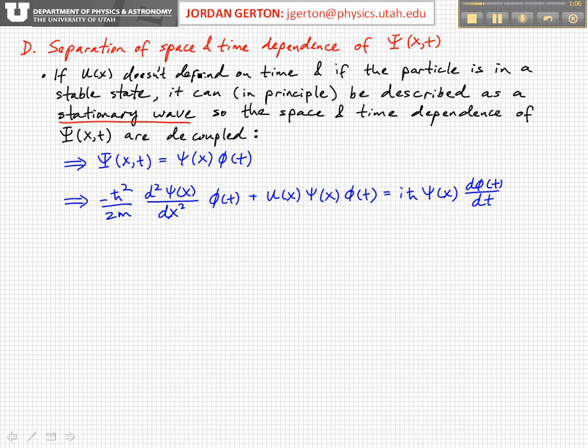Let's see how we do this. The first step is that we just guess that we can do this, or we say for situations in which we can do this, we write the wave function as a product of spatial and temporal parts, psi of x and phi of t.